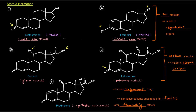All these steroid hormones are important in signaling. Because they are steroid hormones, they will somehow make their way to the nucleus of a cell and alter gene transcription. They exert their effect by altering the transcription of genes.